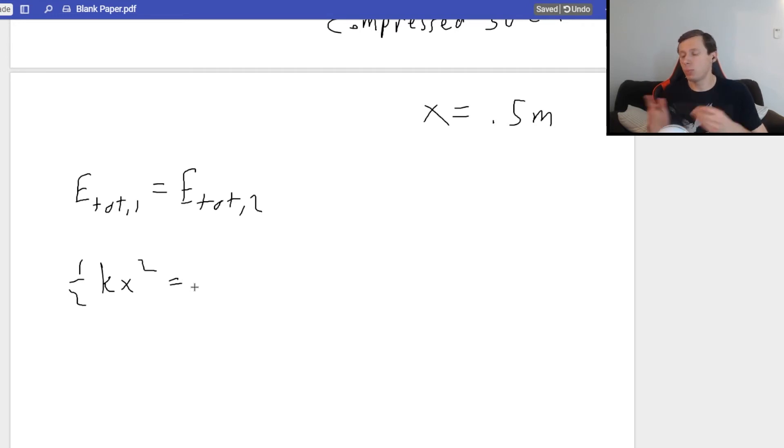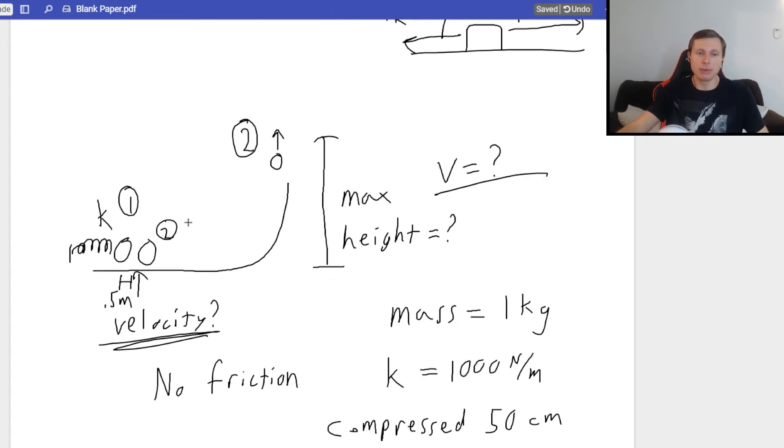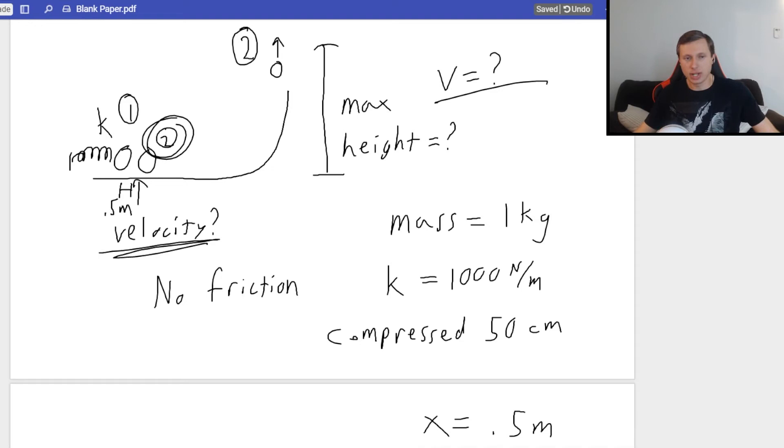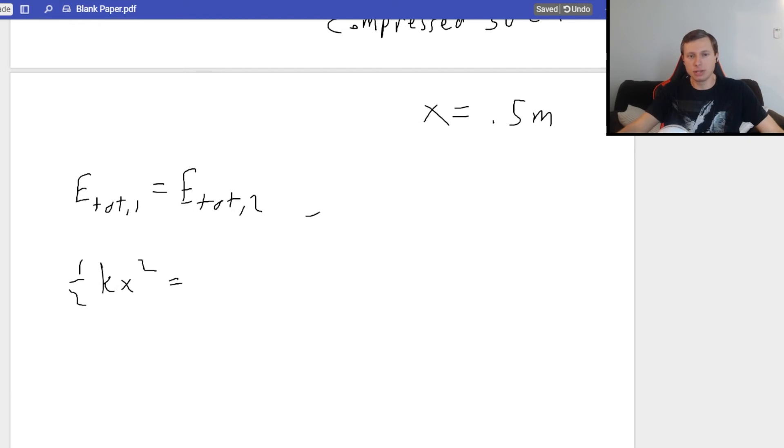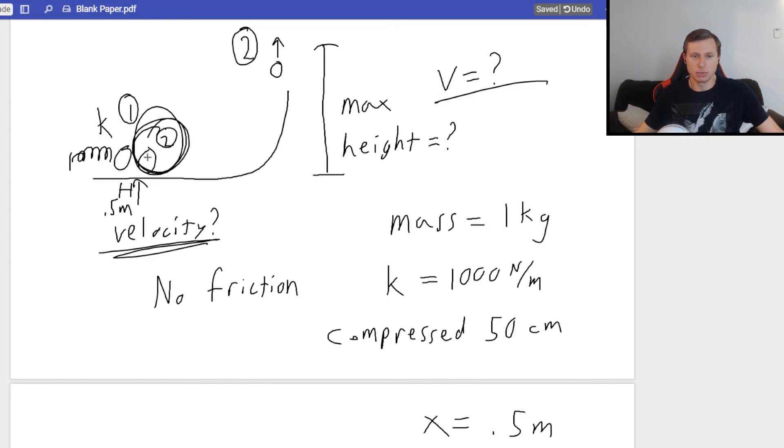Now, at point one, is there a height? Is that ball a height off the ground? No. Which means my height is zero. Great. It means there's no UG. Well, is my ball moving at point one when it's fully compressed? Think about if you ever had a spring-loaded gun before. Is that ball moving when it's fully loaded? No, it's not moving. So there's no kinetic energy either. The only kind of energy there is at point one is spring potential energy. One half K X squared. That's the only energy at point one.